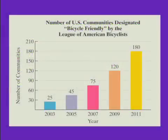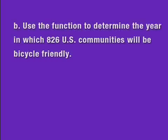The bar graph shows the number of bicycle-friendly U.S. communities as designated by the League of American Bicyclists for selected years from 2003 through 2011. Use the function to determine the year in which 826 U.S. communities will be bicycle-friendly.